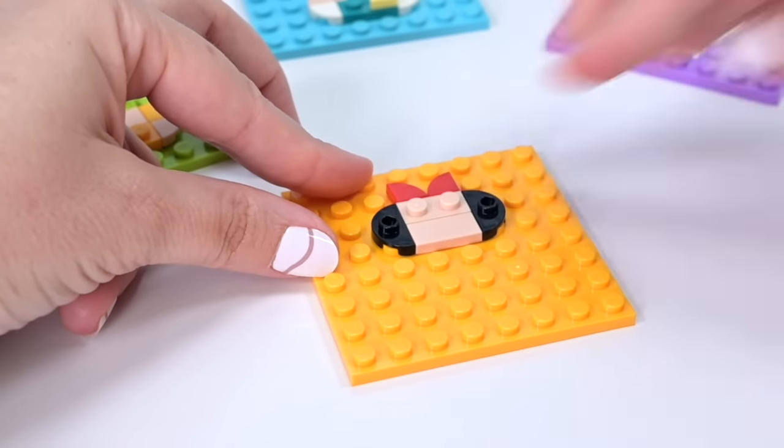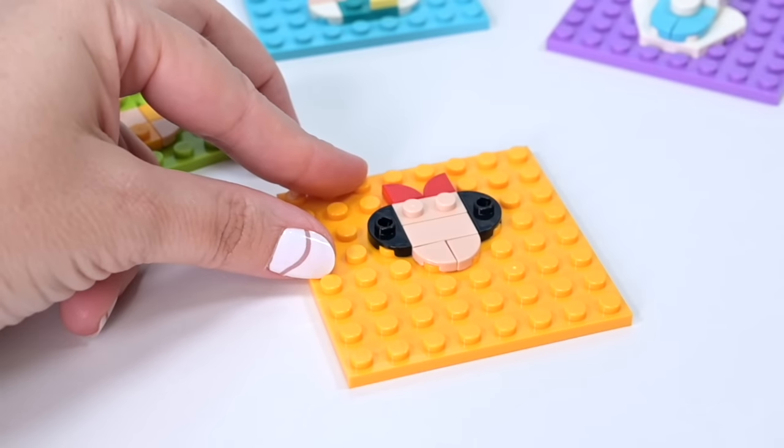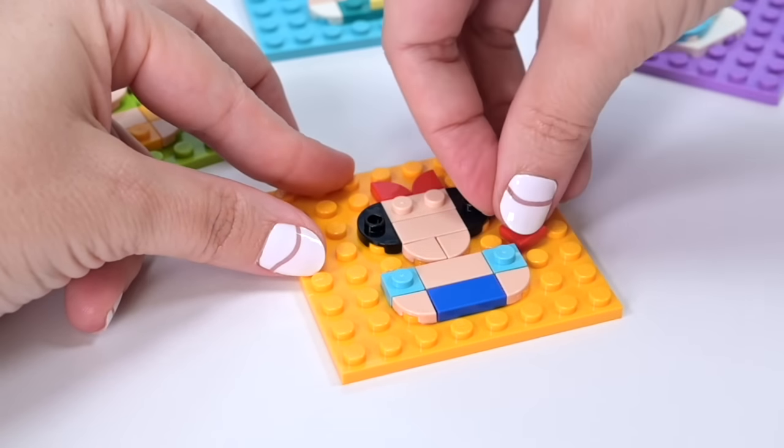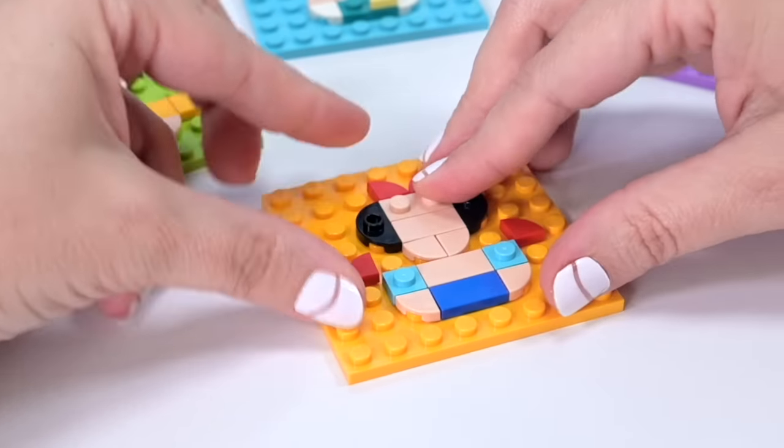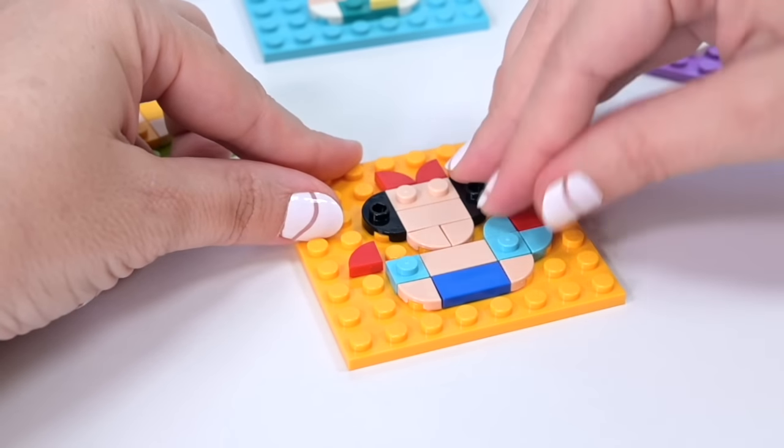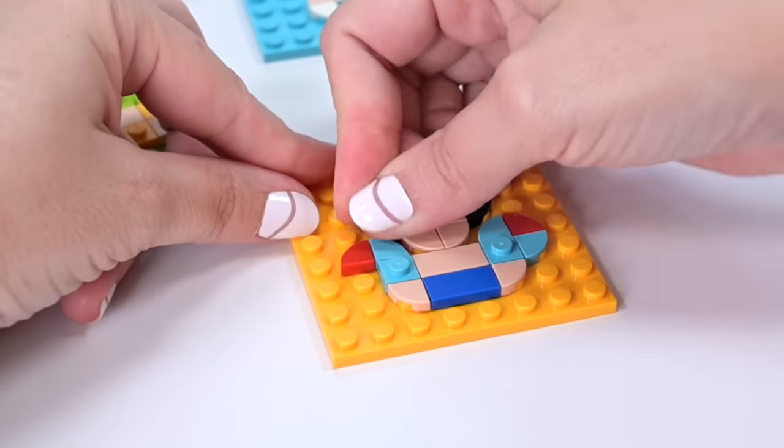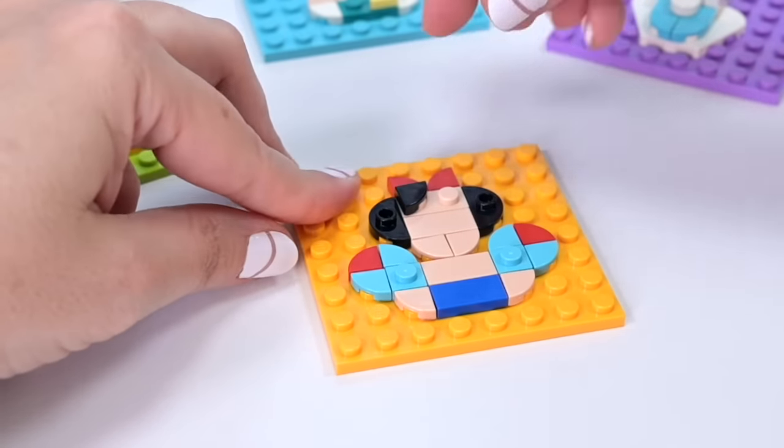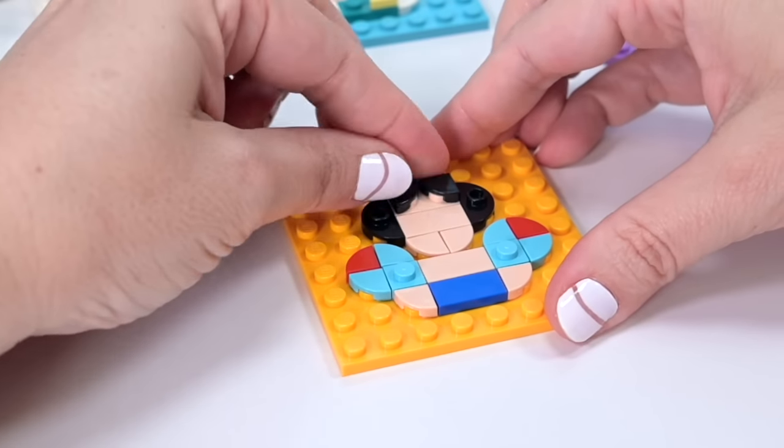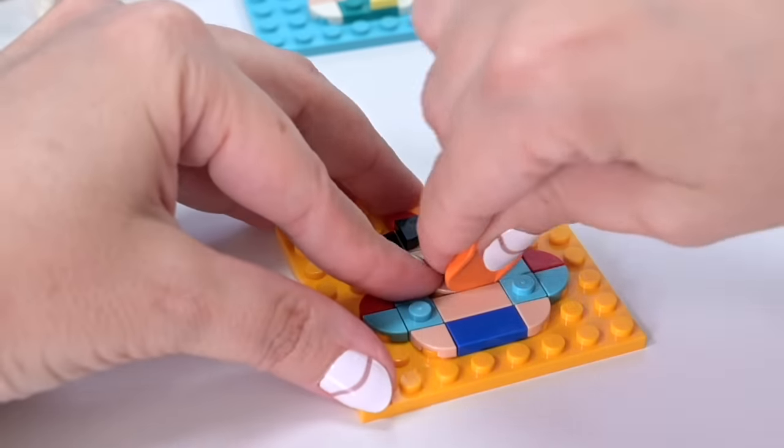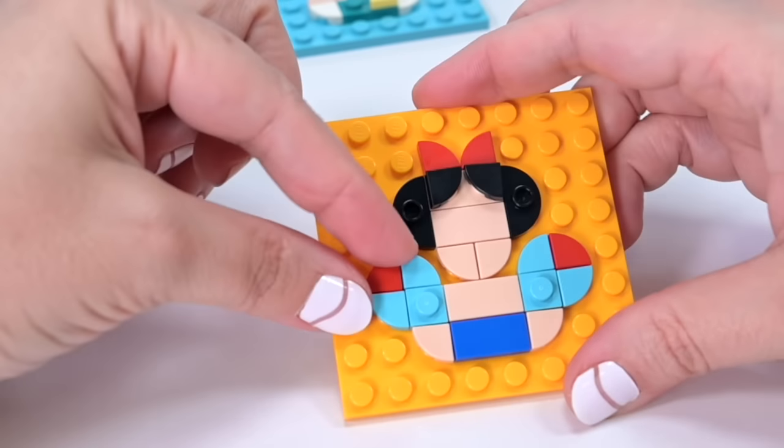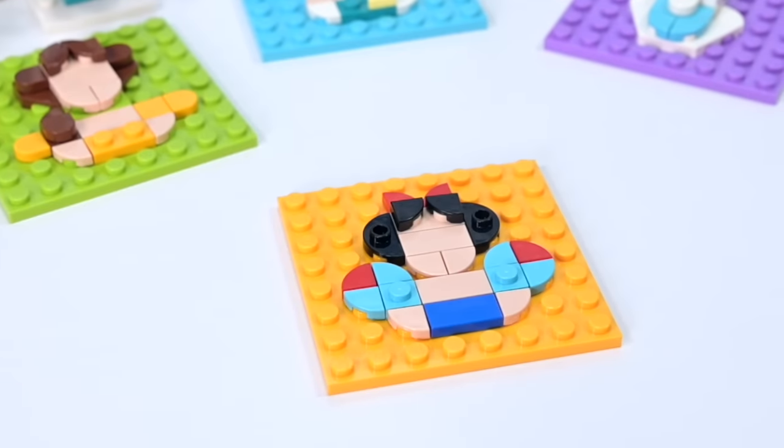Once again we've got the light nougat flesh tone. Oh, it's Snow White with the little red puffy sleeves on top with the blue. Those puff sleeves are great! Then we just need the little curvy bits with the black to make the hair. It just blows my mind how just a few pieces you can instantly recognize who that's supposed to be.